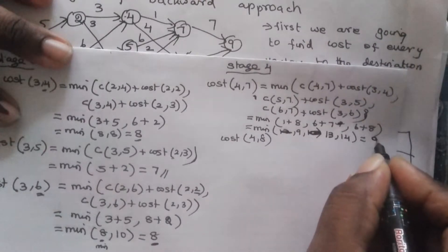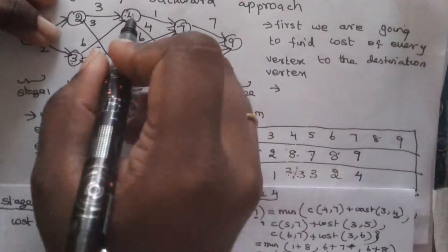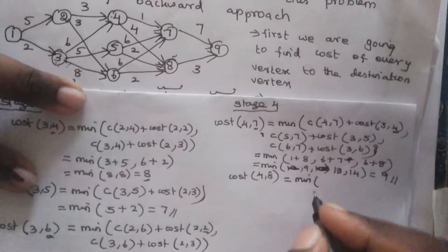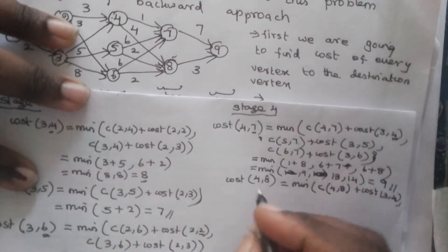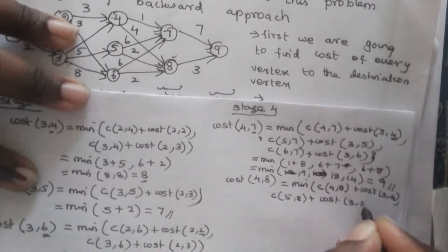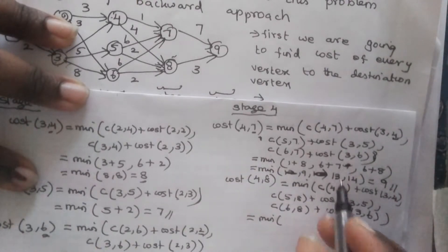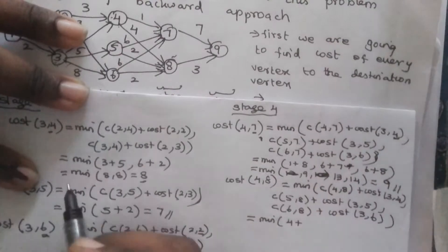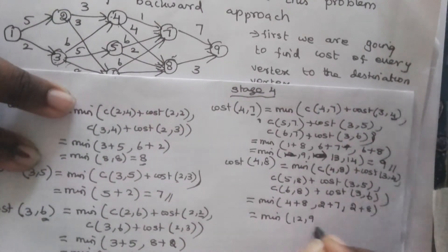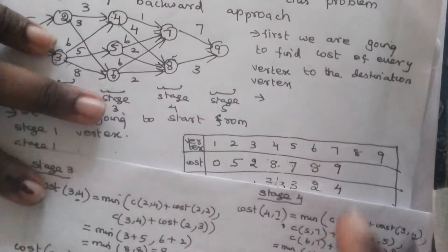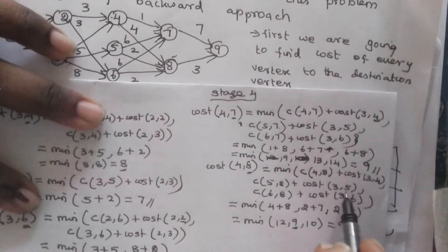Now we find cost(4,8) = minimum of C(4,8)+cost(3,4), C(5,8)+cost(3,5), C(6,8)+cost(3,6) = minimum of 4+8, 2+7, 2+8 = minimum of 12, 9, 10 = 9. The minimum value of 9 is obtained from vertex 5, so D = 5, and this is stored in the table.